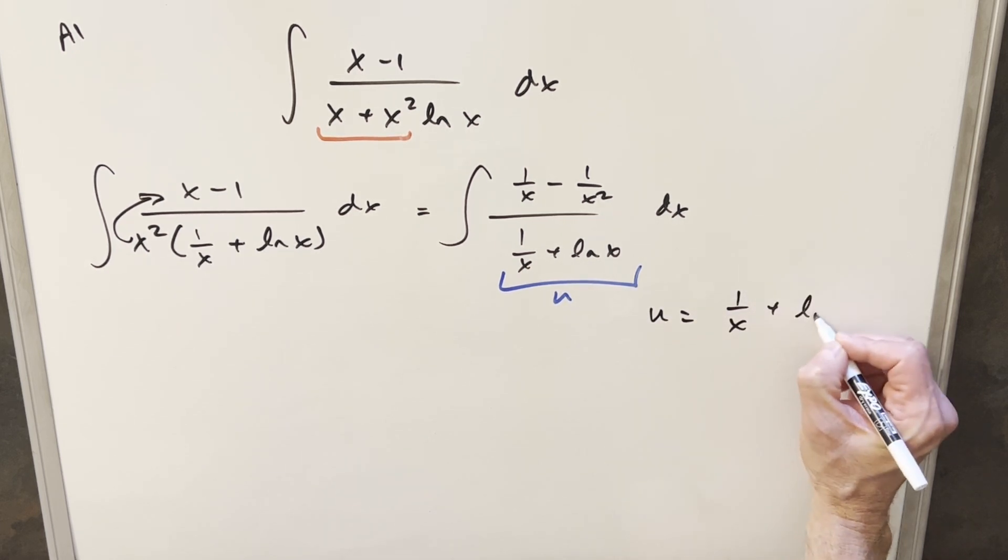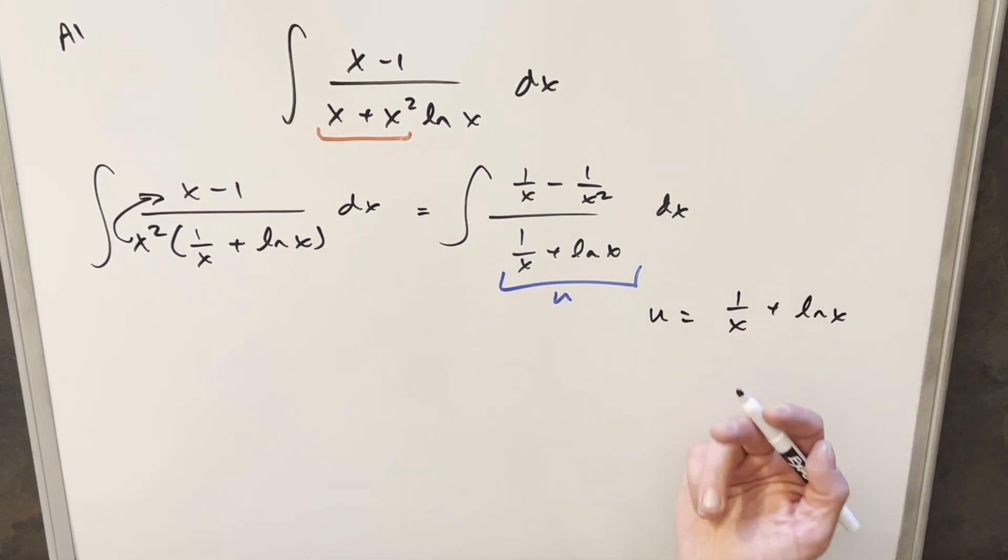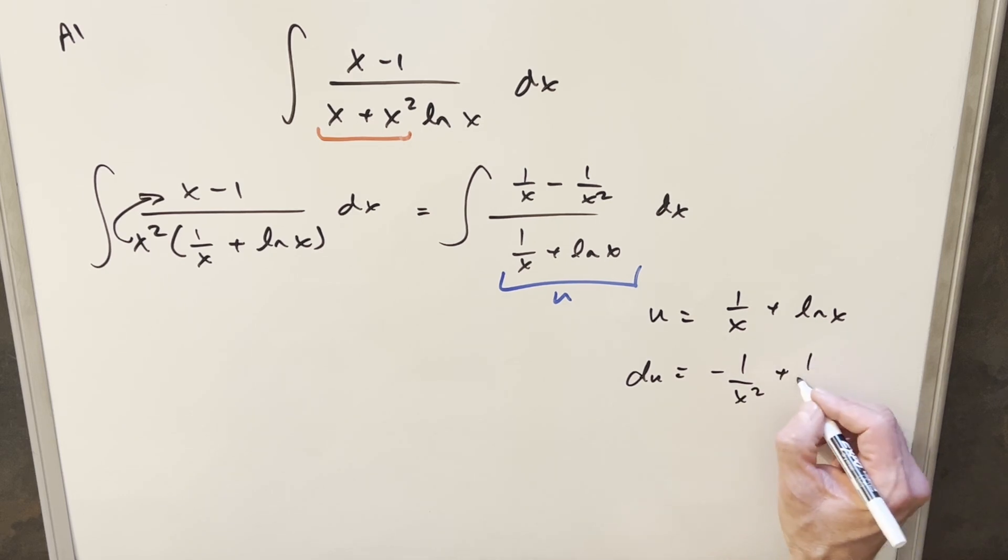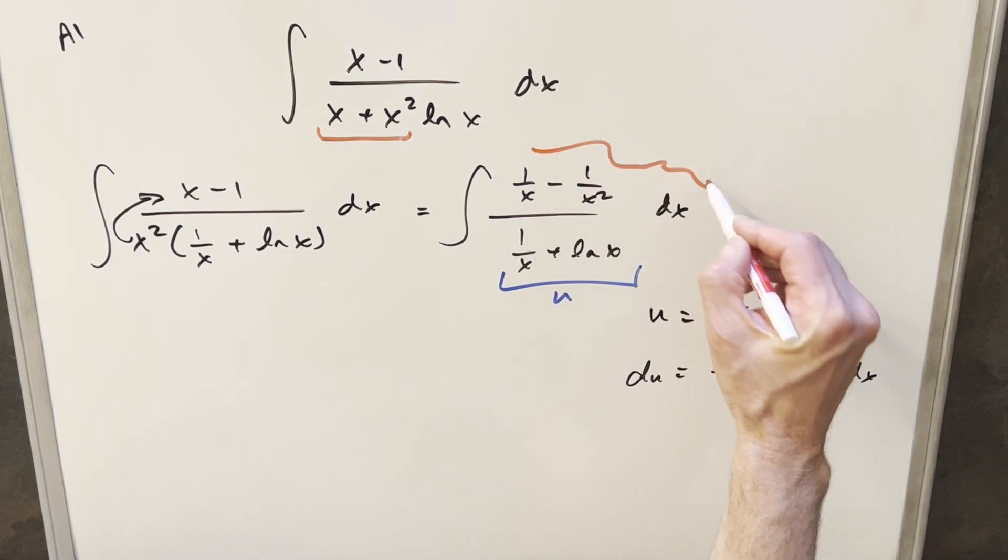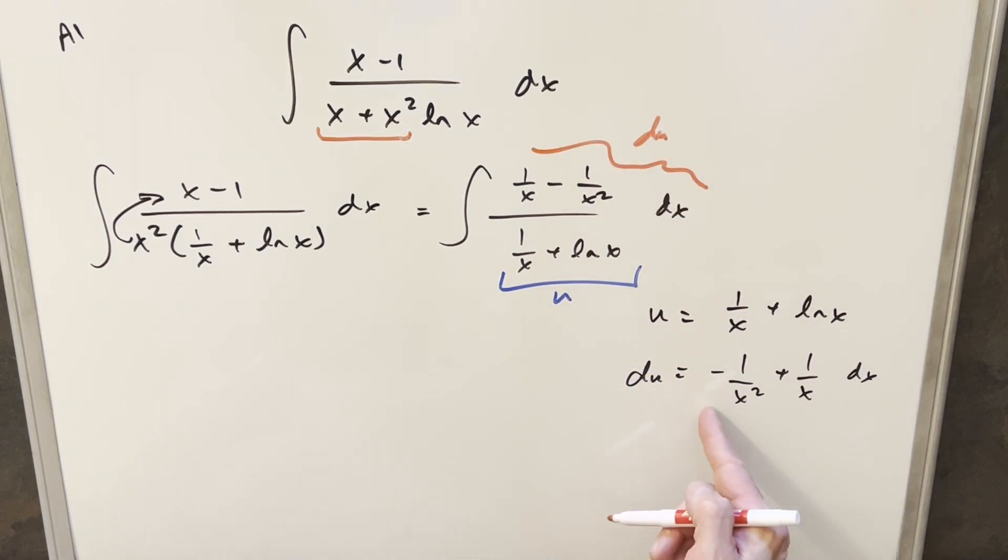U is going to be 1 over x plus ln x. I'll take a derivative here and we'll have du. This is going to be minus 1 over x squared, derivative of ln x is 1 over x dx. But you'll notice now our numerator is exactly the du just in a different order.